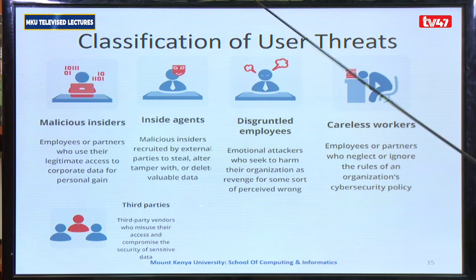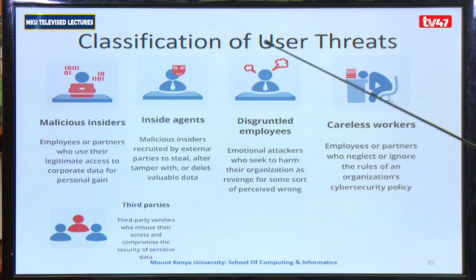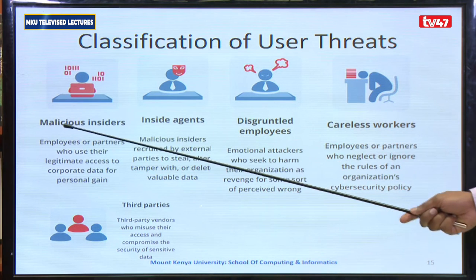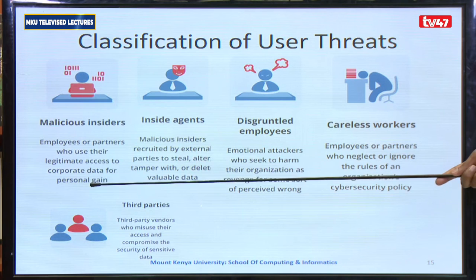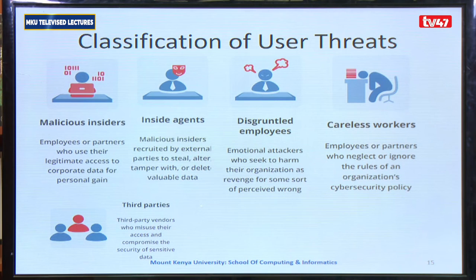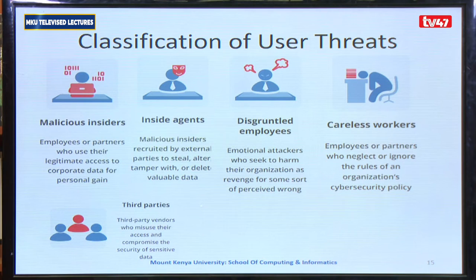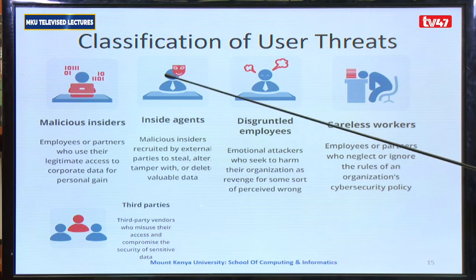There are four classifications of user threats within an institution. One is what we call malicious insiders — someone who is an employee or partner who uses their legitimate access to corporate data for personal gain. The other is insider agents — malicious insiders who are recruited by external parties to steal, alter, or tamper with data within the institution.